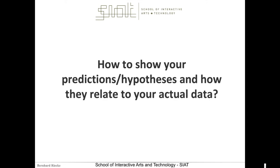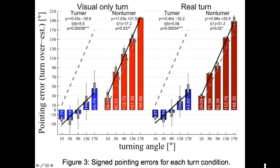Let's talk about predictions and hypotheses and how you could show these. If you have two conflicting hypotheses, there may be a way to indicate both. Here's one plot — there are basically two different predictions: one is diagonal shown as a dashed line, the other is flat. And what you see is that the actual data is in between. This gives some indication, though I'm not saying it's a perfect plot.